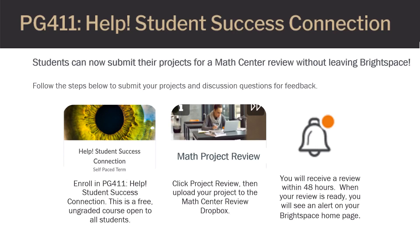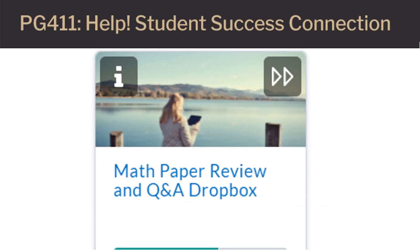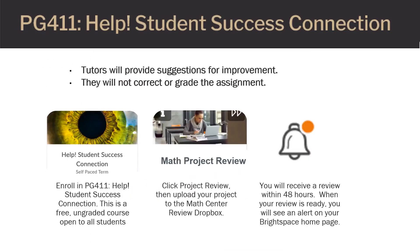To submit a project, first enroll in PG-411, then click Math Project Review. From here, you can click on the Math Center Review Dropbox and upload your project or question. A tutor will provide suggestions for improvements. They will not correct or grade assignments. When your review is ready, you will see an alert on your Brightspace homepage. Click on the alert for the link to your review. You will receive your review within 48 hours.